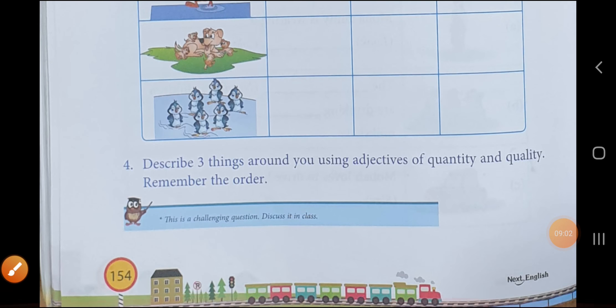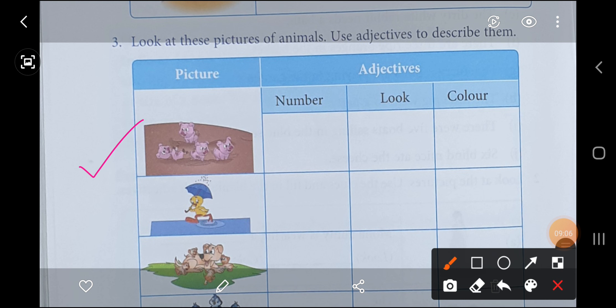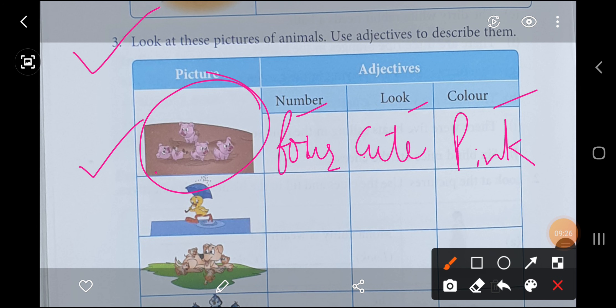Now the next question, question number three, you will do it by yourself. In this what you have to do - number, look, color. You will look at this picture. You will write number like one, two, three, four - four puppies are here, so you will write four here. Look, how do they look? If you think cute, then you write cute. Color - you can write pink here. So this is your homework. You will do question number three in your book by yourself with your imagination.